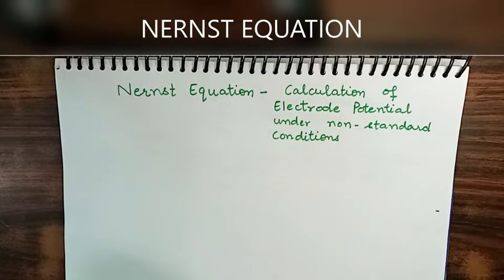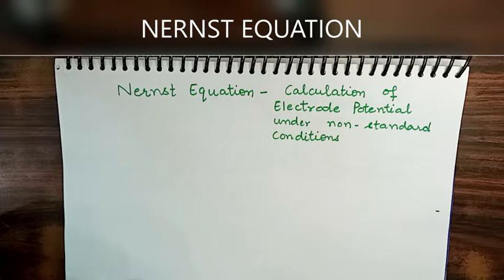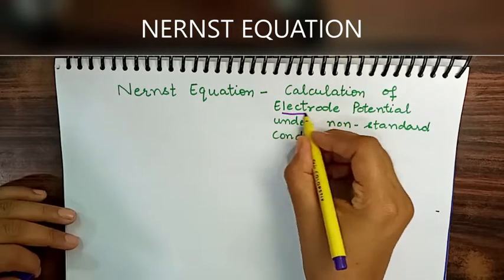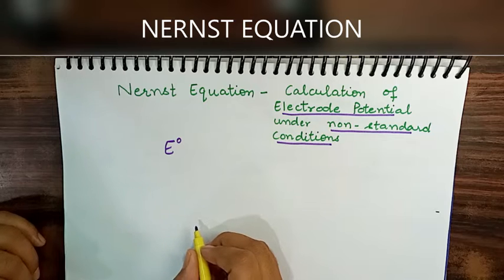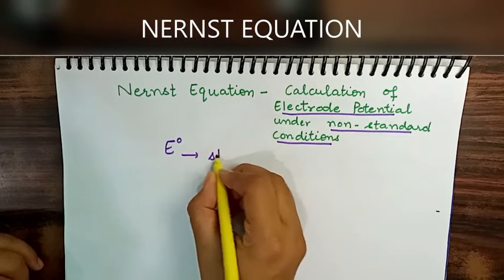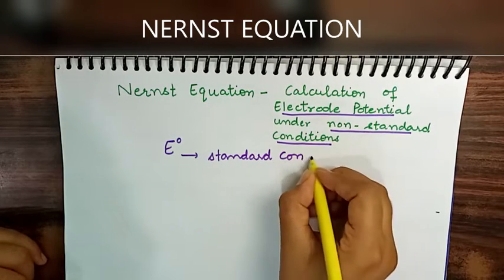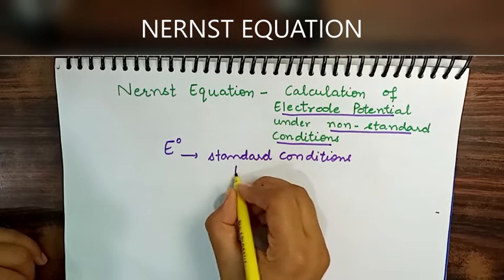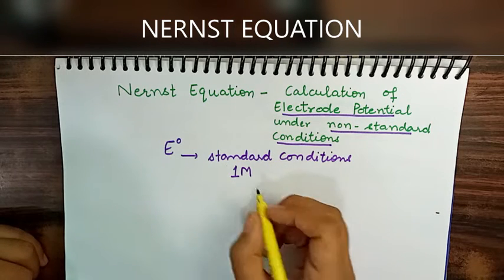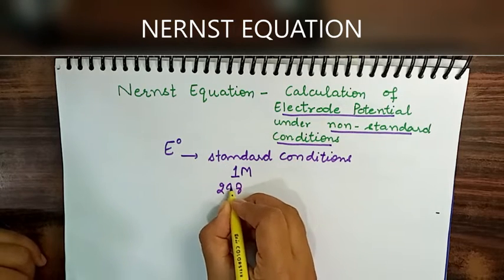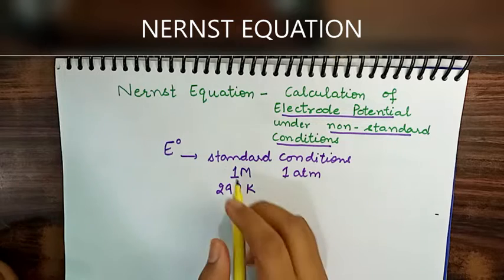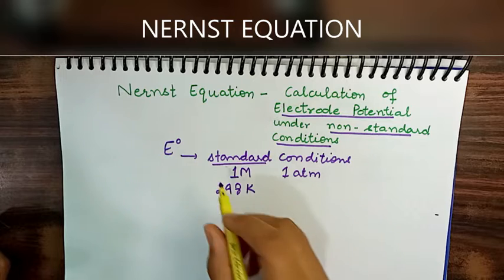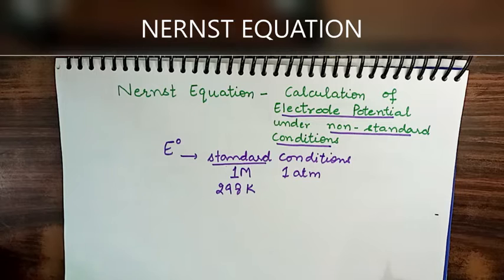Today's topic is the Nernst equation, a very important topic in electrochemistry. The Nernst equation tells us about electrode potential under non-standard conditions. Electrode potential is denoted as E° when calculated under standard conditions — meaning the solution concentration is 1 molarity, temperature is 298 Kelvin, and for gas electrodes, pressure should be 1 atmosphere. These are called standard conditions.